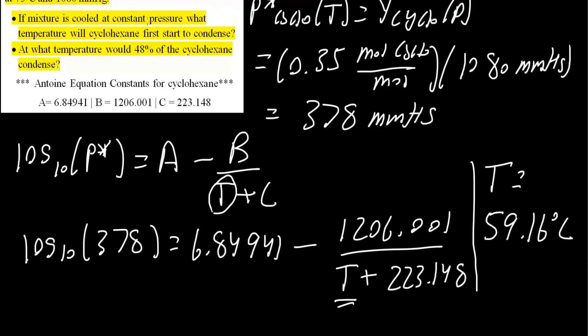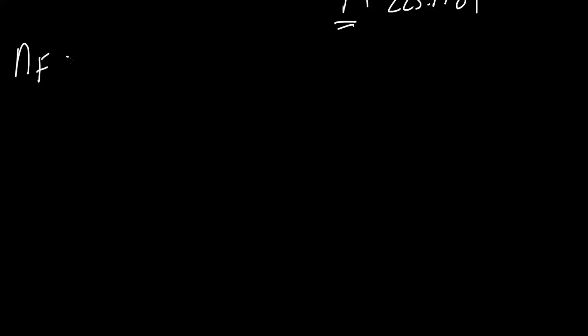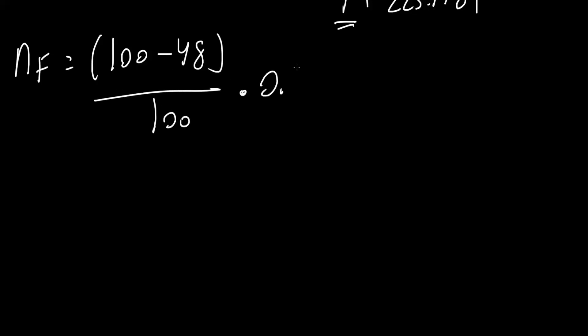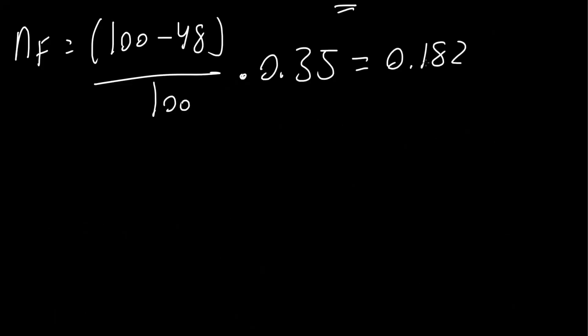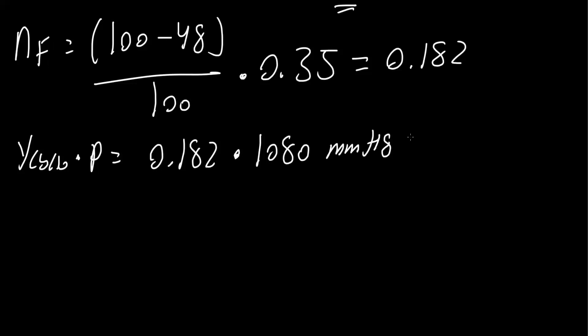Next, at what temperature would 48% of the cyclohexane condense? First, we need to find the mole fraction of cyclohexane in the vapor phase when 48% has condensed. N_f equals (100 minus 48) divided by 100, times 0.35 — because the original mole fraction of cyclohexane was 0.35 — giving 0.182. So Y_cyclohexane times pressure equals 0.182 times 1080 millimeters of mercury, which equals 196.6 millimeters of mercury.